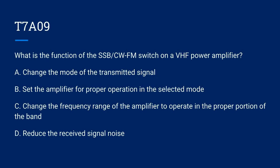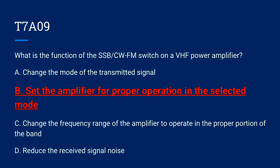T7A09. What is the function of the SSB-CW-FM switch on a VHF power amplifier? A. Change the mode of the transmitted signal. B. Set the amplifier for proper operation in the selected mode. C. Change the frequency range of the amplifier to operate in the proper portion of the band. Or D. Reduce the received signal noise. The correct answer is B. Set the amplifier for proper operation in the selected mode.